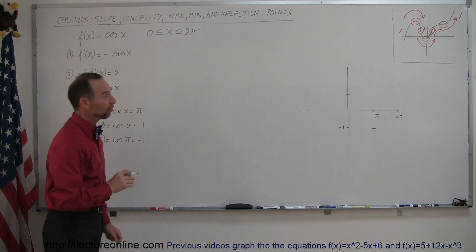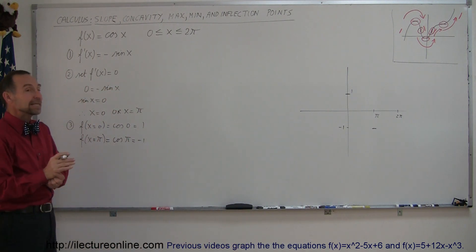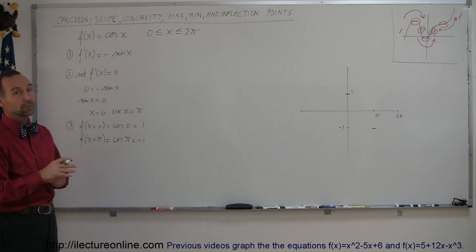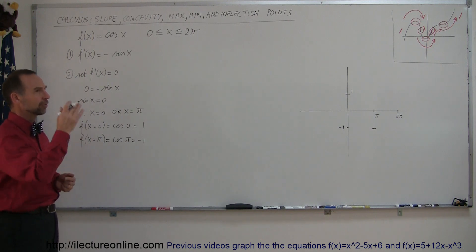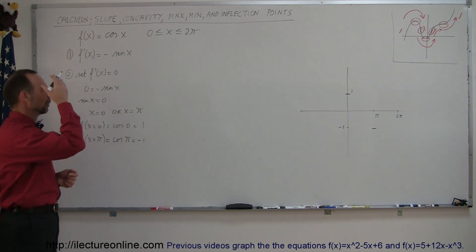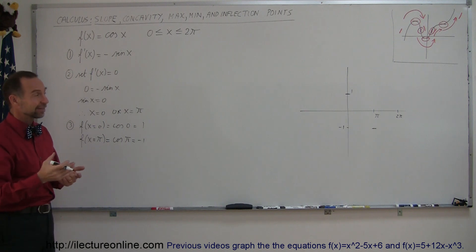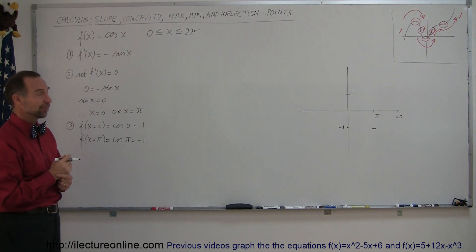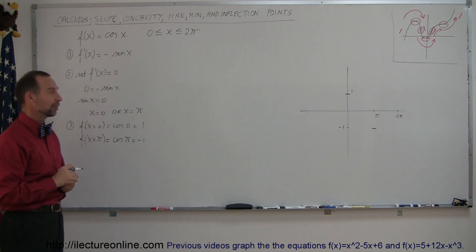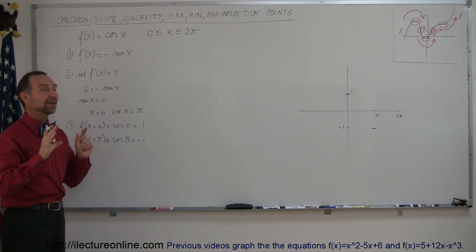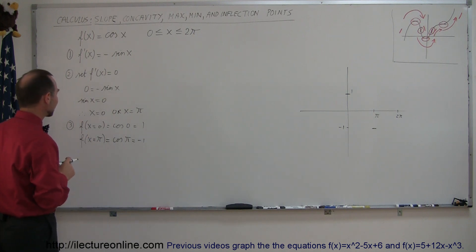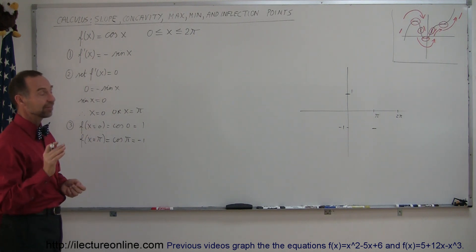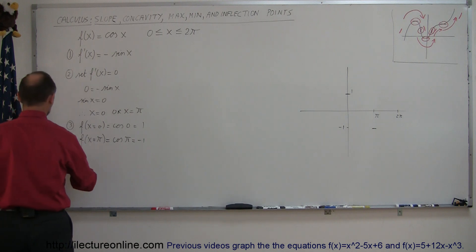We found two places where the slope is 0, but that doesn't mean yet that those are max or min — they could also be horizontal inflection points. Of course, since we're dealing with cosine of x, those are likely the high and low values, but let's not assume that yet. The next step is to find the second derivative of the function.